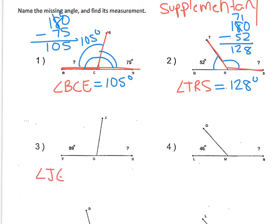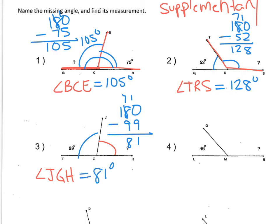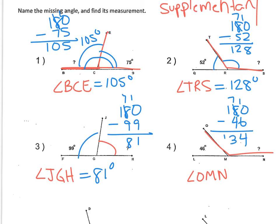Angle J-G-H is right here. Together these two angles make 180 degrees, so we do 180 minus 99, and that tells us how much is left over for the other angle — which is 81 degrees. The final missing angle is O-M-N. Together they make a straight line of 180 degrees, so 180 minus 46 gives us 134 degrees. Those are some examples of how to find a missing angle when given supplementary angles, and those are some basics on angles.